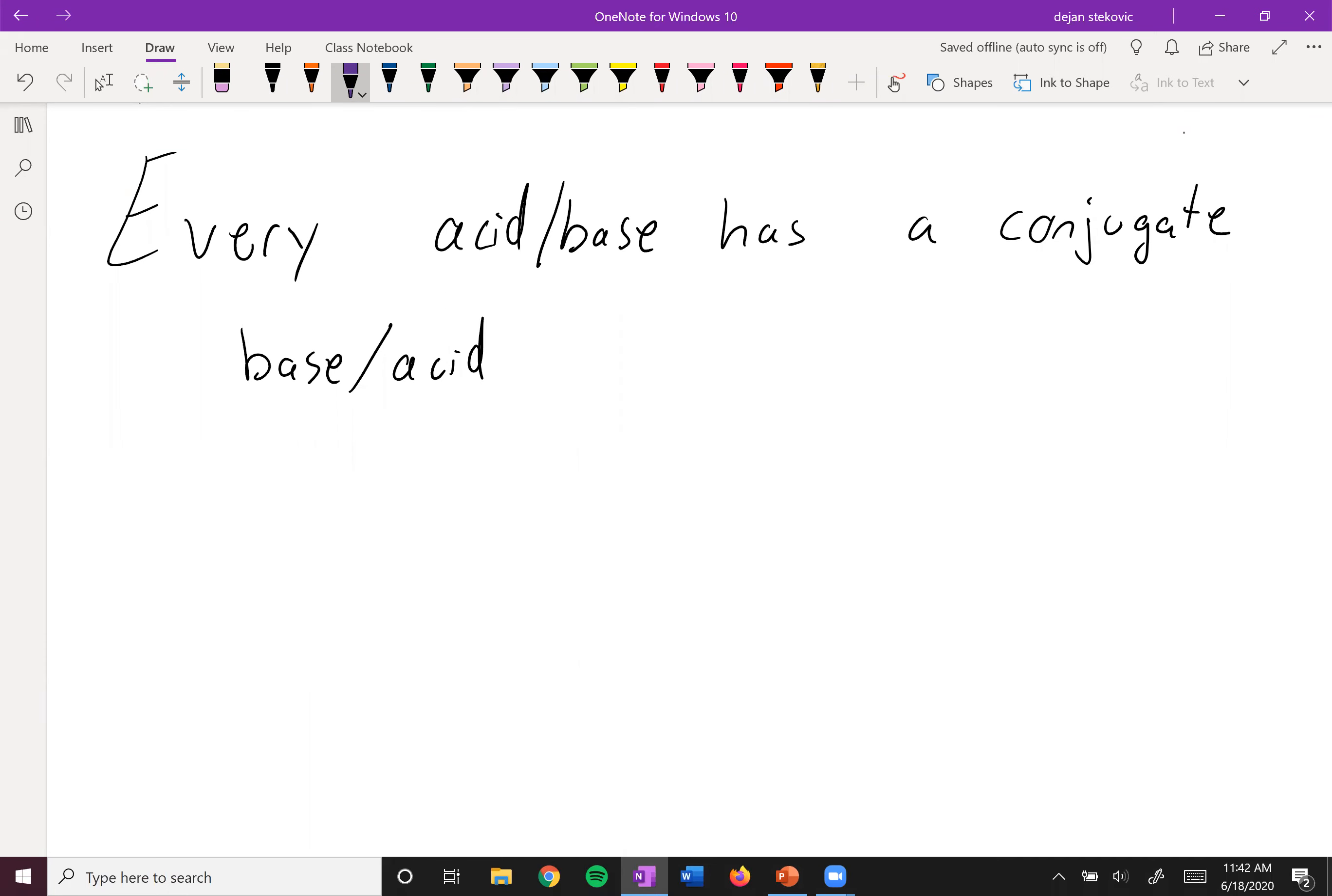Alright, so we talked about conjugate pairs. Every acid slash base has a conjugate base slash acid, right? So if we talk about HA, an acid interacting with water, it can form H3O plus plus A minus.